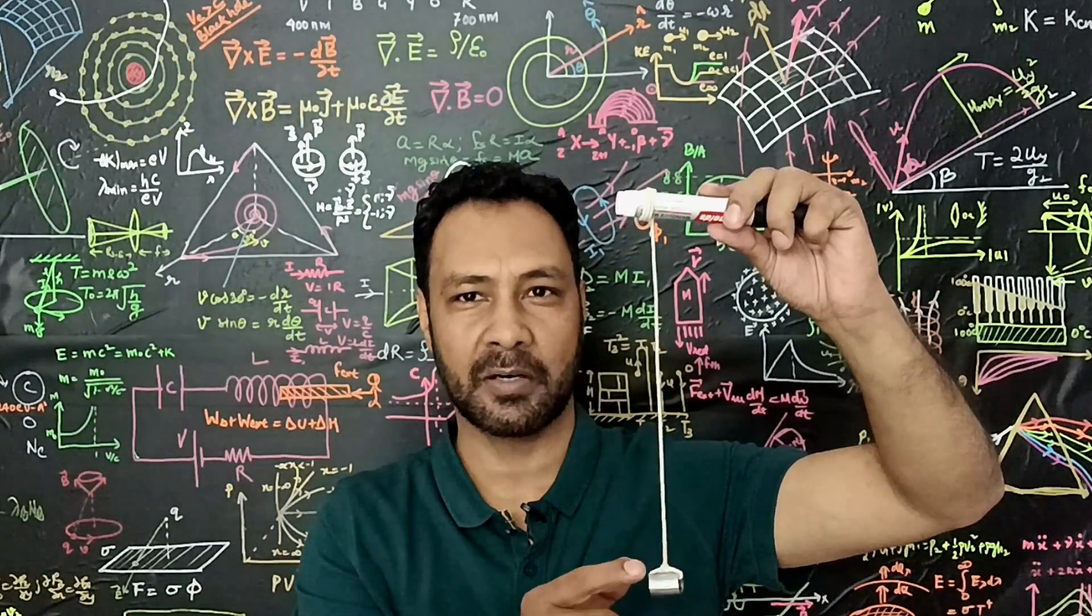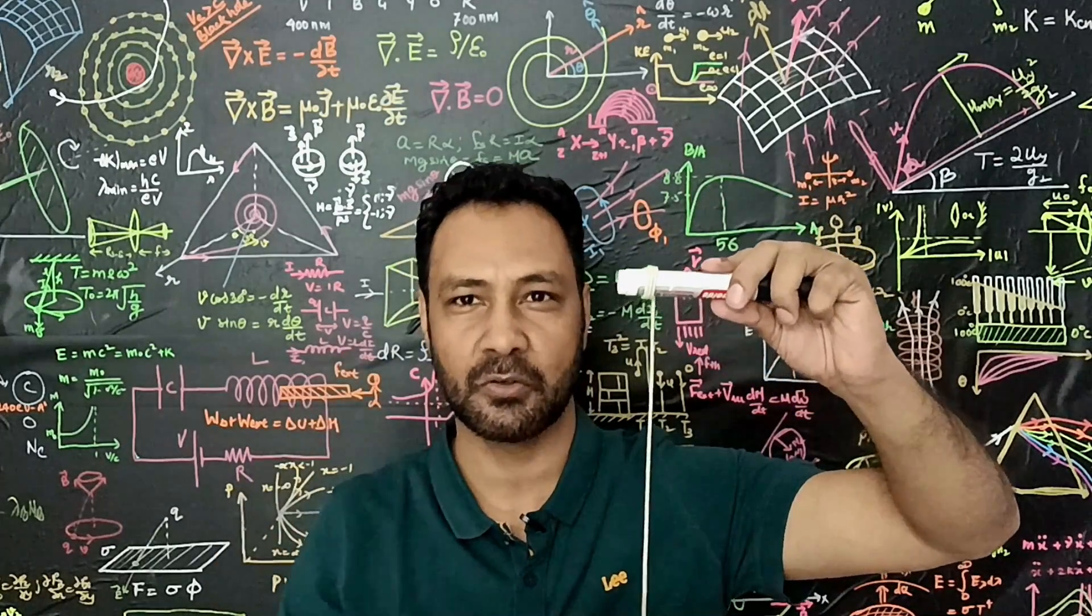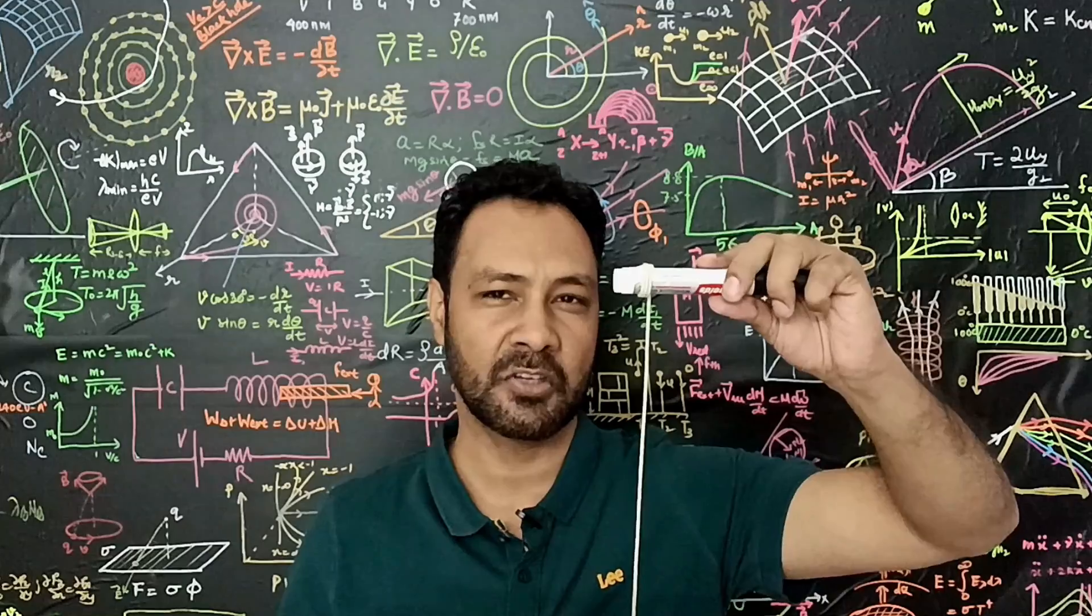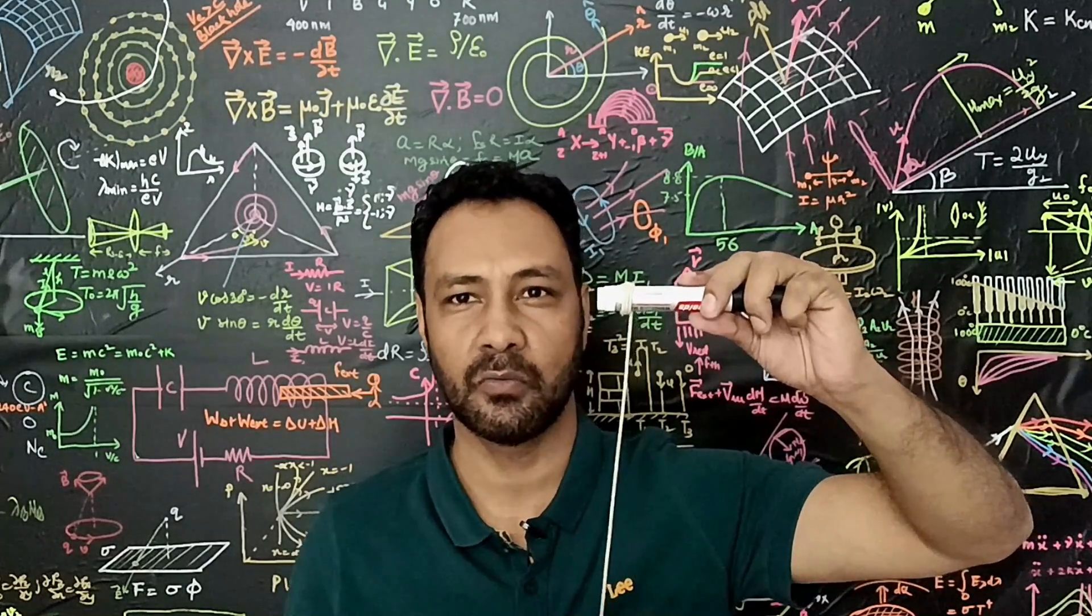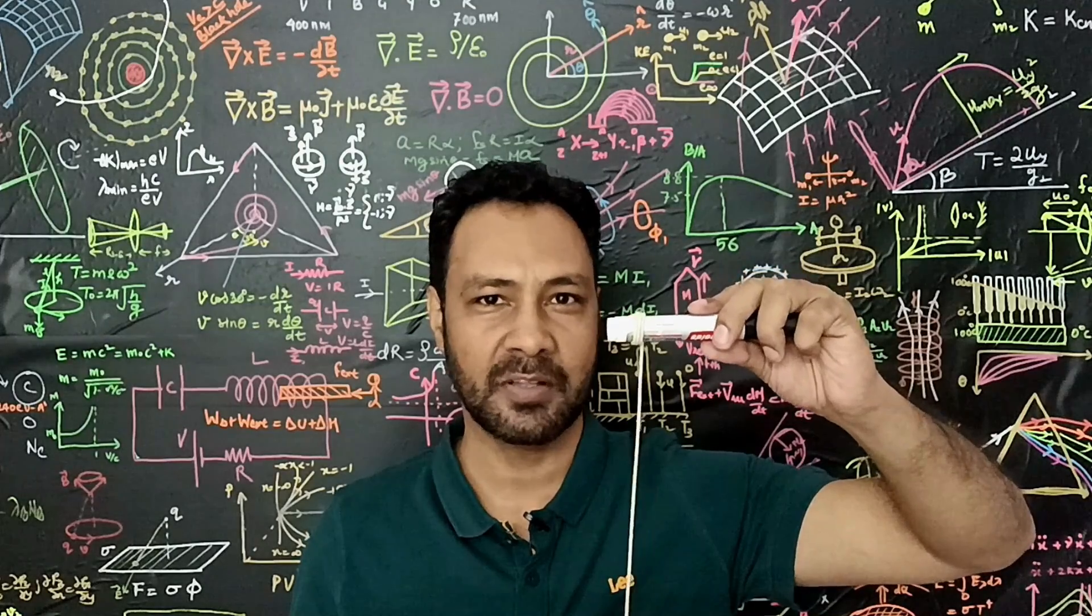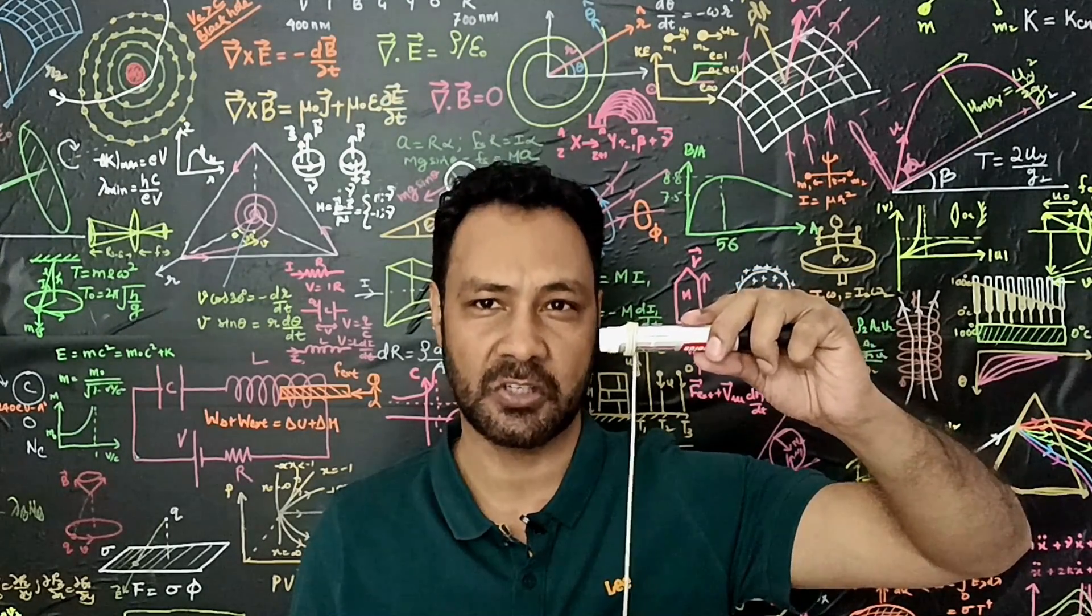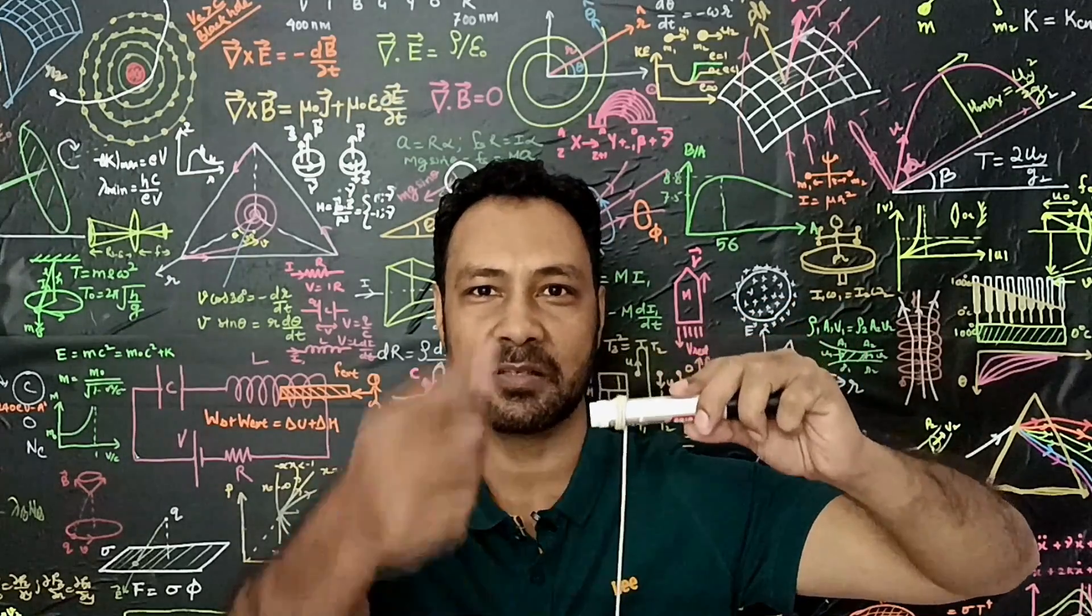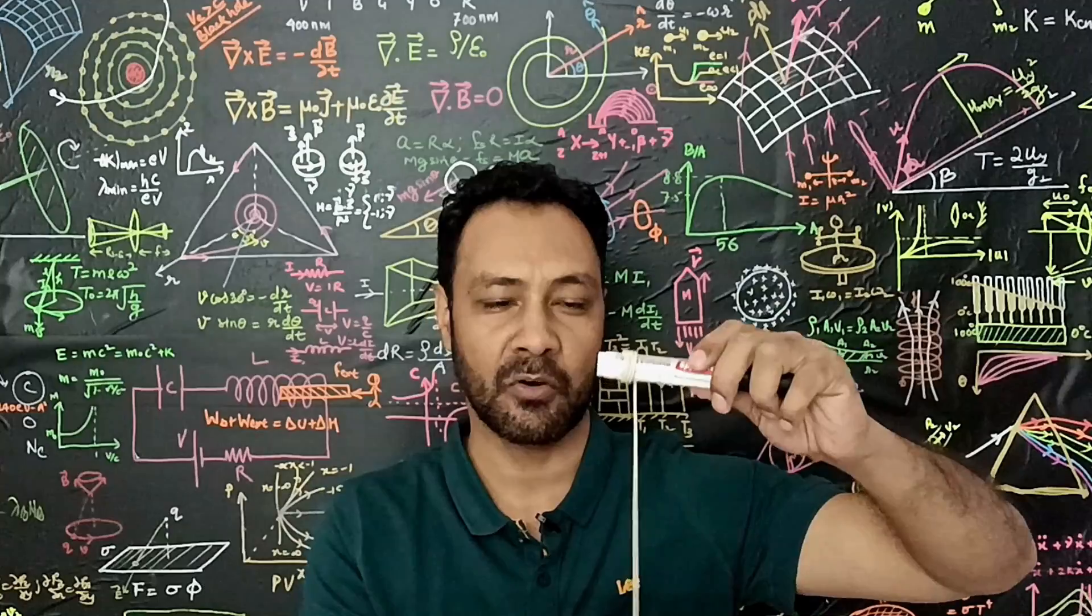Forces acting on this bob are its weight and tension. In one cycle work done by weight is zero and also work done by tension is zero in any time interval because tension is always perpendicular to velocity. So in one cycle total work done is zero so the kinetic energy of the particle should not change. So it means the average speed is a constant in a cycle. So speed is actually not changing.